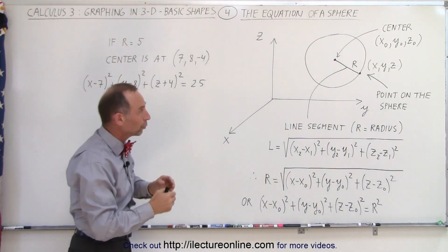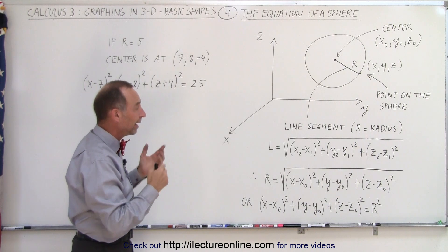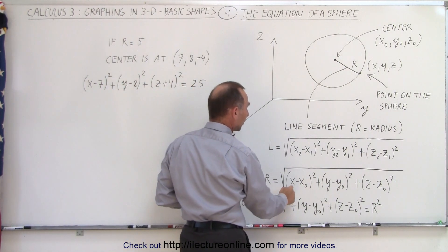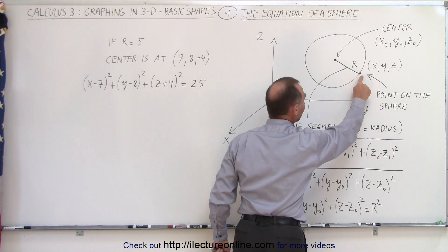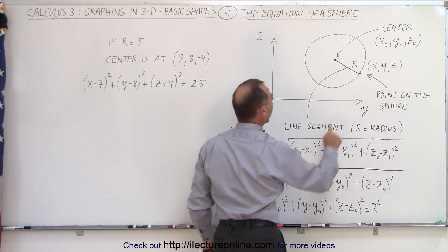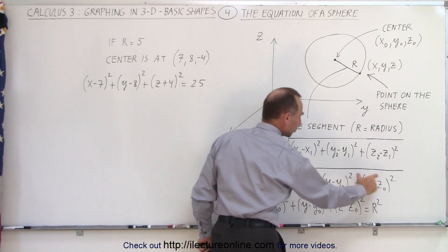That's the exact same technique we're going to use for the sphere, except that x2 and x1 now become x and x sub-naught. x is the coordinate of the point on the sphere, and x sub-naught is the coordinate of the center of the sphere. So we do that for the three directions.